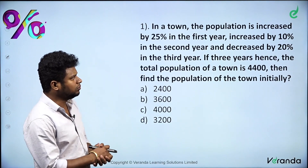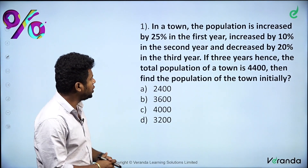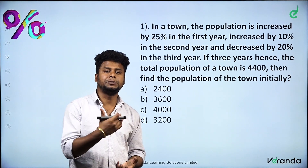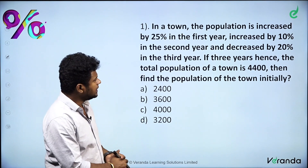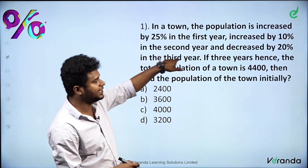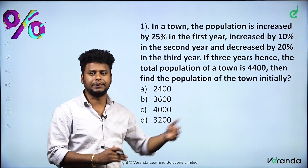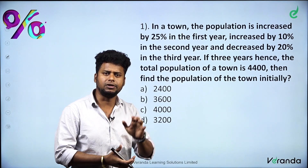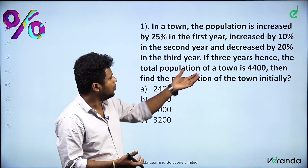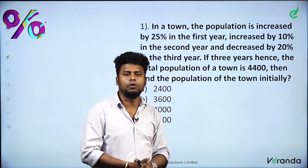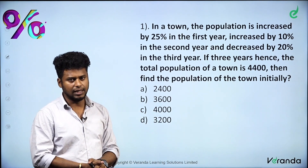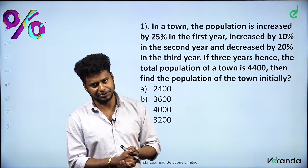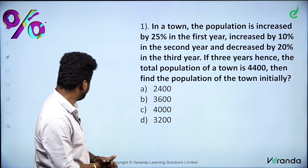First question. In a town, the population is increased by 25% in the first year, increased by 10% in the second year, and decreased by 20% in the third year. At the end of the third year, the population of the town is 4400. Find the initial population of the town, and also find what the population is in the third year.